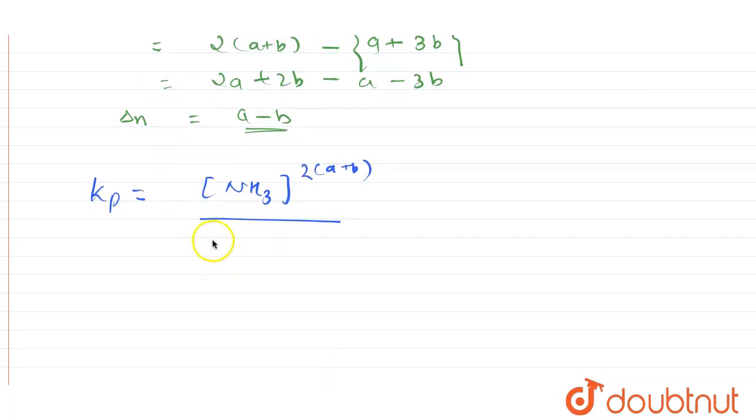We had nitrogen raised to A and hydrogen raised to 3B, and RT value is constant, and delta N we gave out as A minus B.